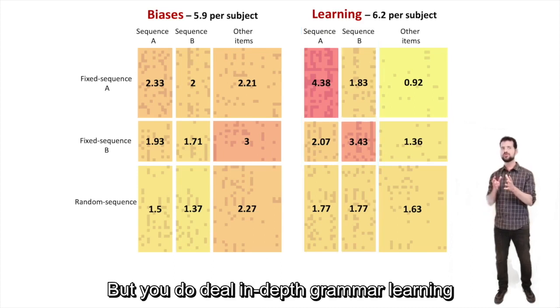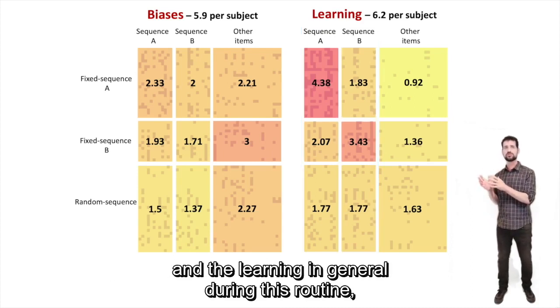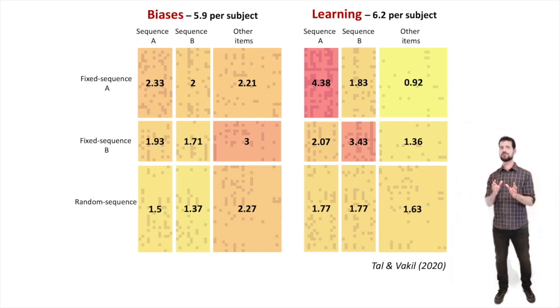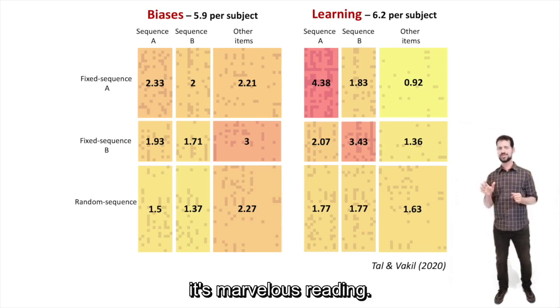So in this talk we focus mostly on comparison between sequence A and sequence B triplets, which is a fair comparison. But we do deal in depth with grammar learning and with learning in general during SRT in other works of ours, including a paper we have just published in Cognition, which I highly recommend. It's marvelous reading.